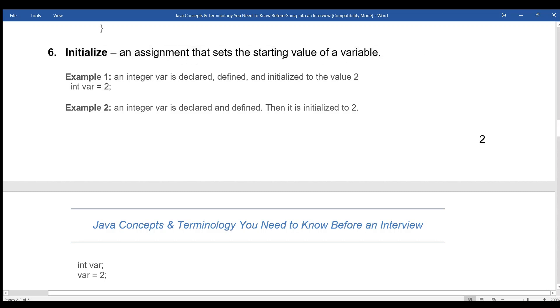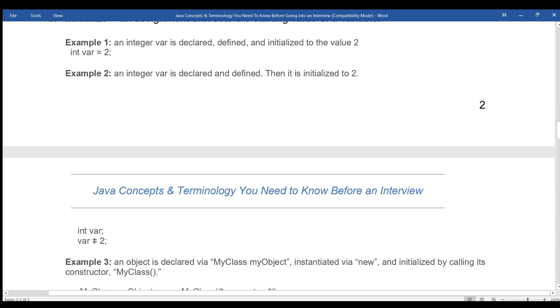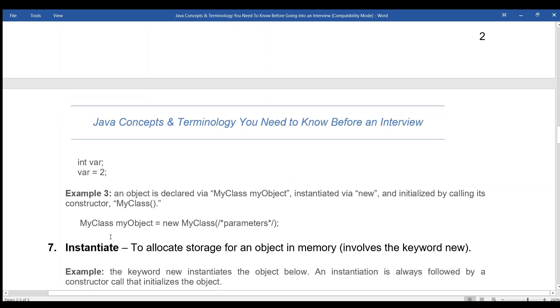Initialize: An assignment that sets the starting value of a variable. Example 1: an integer var is declared, defined, and initialized to the value 2: int var equals 2. Example 2: an integer var is declared and defined, then it is initialized to 2: int var, var equals 2. Example 3: an object is declared via MyClass myObject, instantiated via new, and initialized by calling its constructor myClass. myClass myObject equals new myClass with parameters.